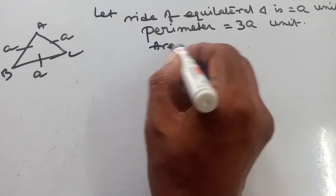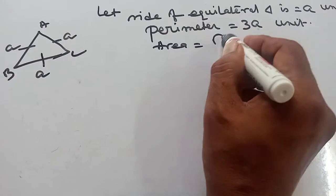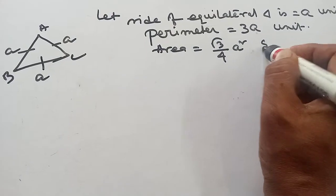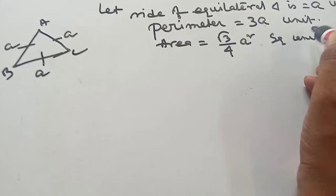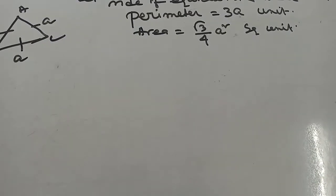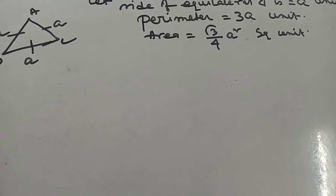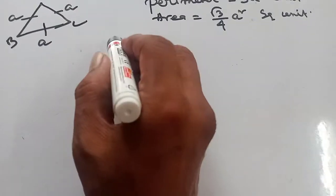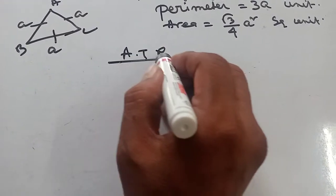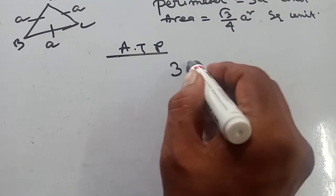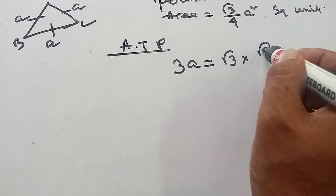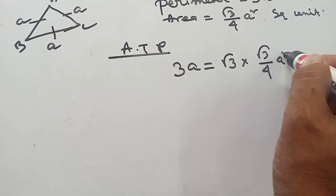Area is equal to root 3 by 4 into A square square units. That means area equals root 3 by 4 A squared square units. Now, according to the problem, perimeter is equal to root 3 times the area, that is root 3 into root 3 by 4 into A squared.